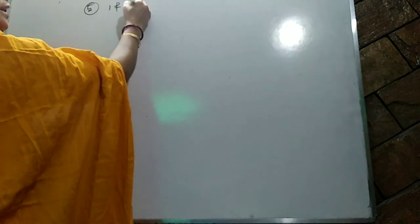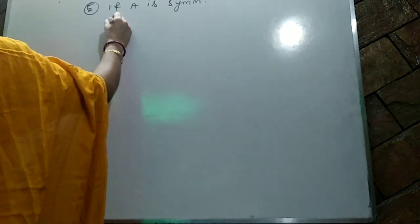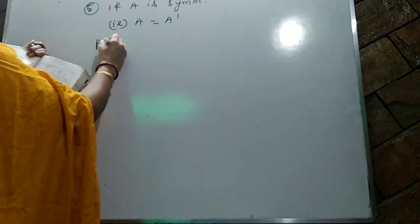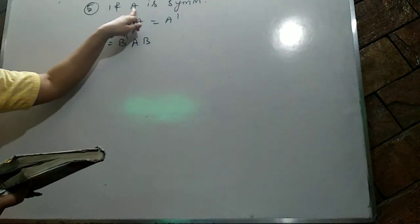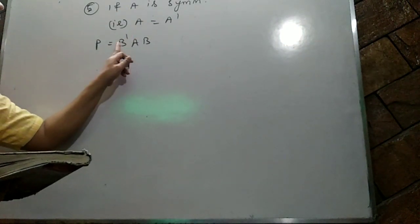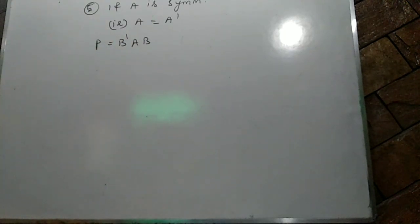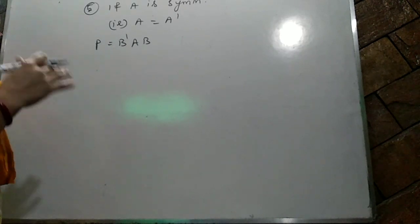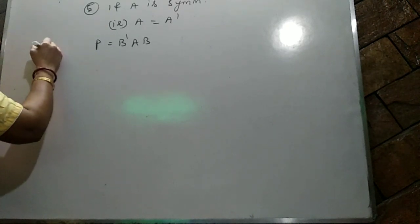If A is symmetric — meaning A equals A transpose — then you have to prove B transpose AB is also symmetric. If A is skew-symmetric, then you have to prove B transpose AB is also skew-symmetric. To check, take both sides transpose.